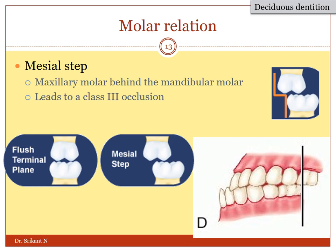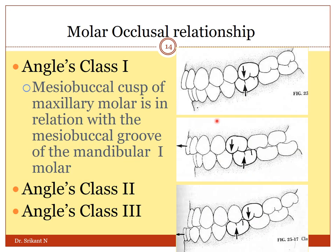This kind of classification is called molar occlusion relationship given by Angle. There are three different types: Angle's Class 1, Class 2, and Class 3. Angle's Class 1 is typically defined such that the mesiobuccal cusp of the maxillary molar is in relation with the mesiobuccal groove of the mandibular first molar. In this case, the maxillary central incisor is slightly ahead of the mandibular central incisors.